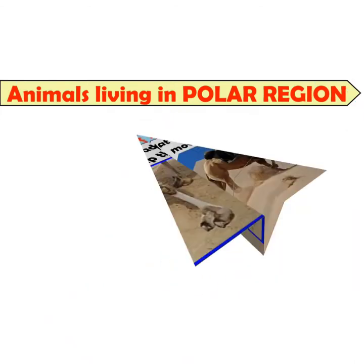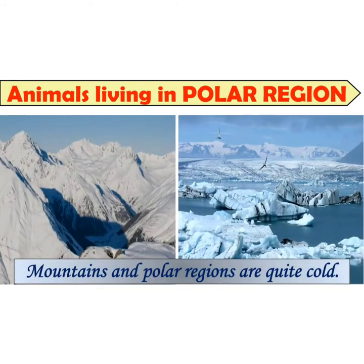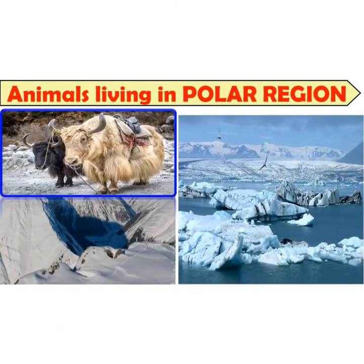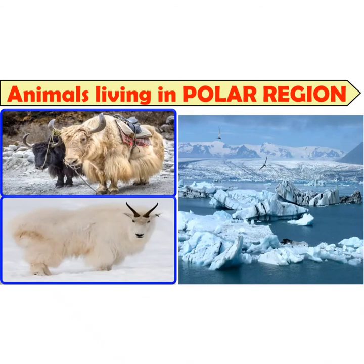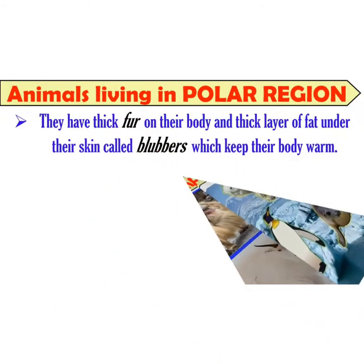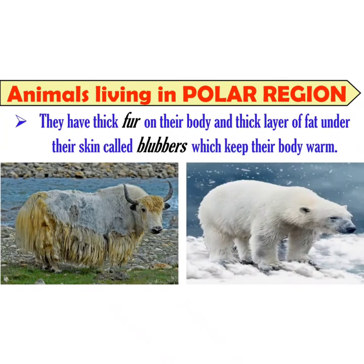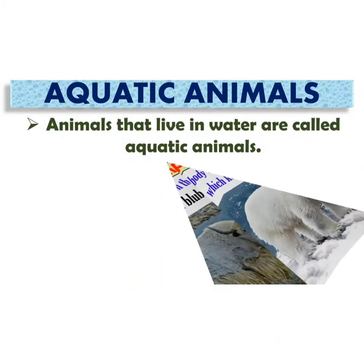Animals living in mountains and polar regions: mountains and polar regions are quite cold. Mountain goats and yak are found on the mountain, and animals like polar bear, penguins, and seals live in polar regions. They have thick fur on their bodies to keep them warm. Under the skin, these animals have a thick layer of fat called blubber which keeps their body warm. Thus, these animals have adapted to live in different climatic conditions.